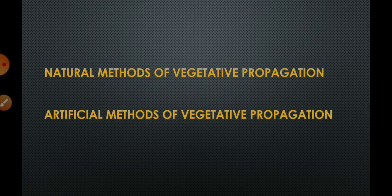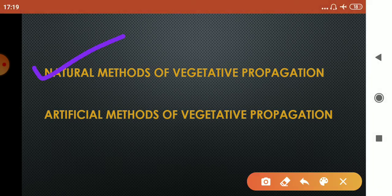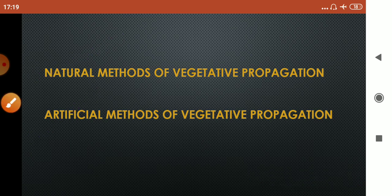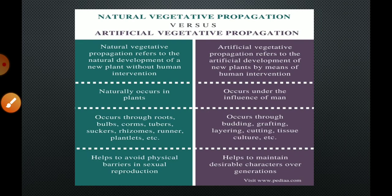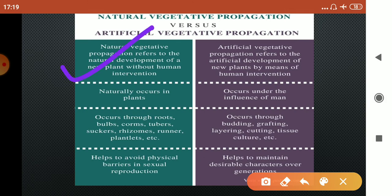Children, there can be two types of vegetative propagation. The first one is the natural method of vegetative propagation, and the second one is the artificial method of vegetative propagation. Natural vegetative propagation refers to the natural development of new plants without the intervention of humans, whereas artificial vegetative propagation refers to the development of new plants by means of human intervention.